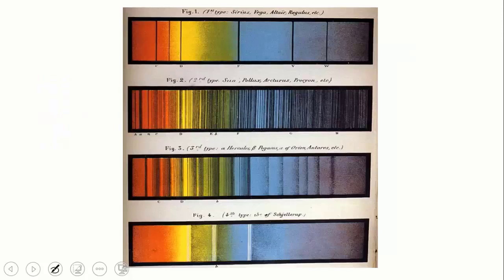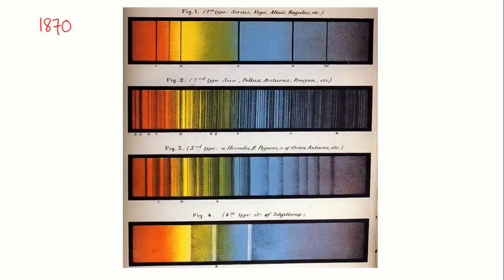And it turns out that different stars have very different fingerprints. They're made up of different combinations of elements. This lithograph here from 1870 shows stars that were classified into four groups according to the lines in their spectrum.